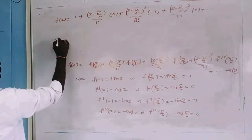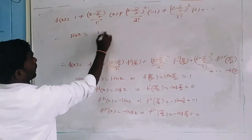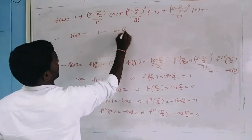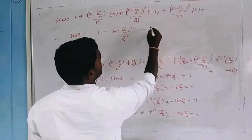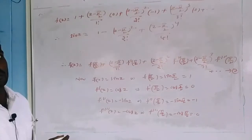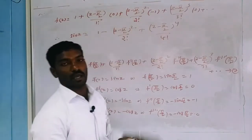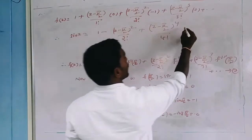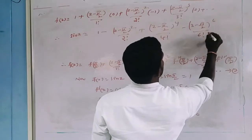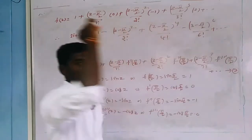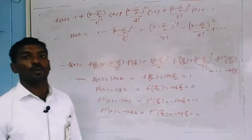Therefore, F of Z equals sin Z equals 1 minus Z minus pi by 2 whole square by 2 factorial, plus Z minus pi by 2 whole power 4 by 4 factorial, minus Z minus pi by 2 whole power 6 by 6 factorial, plus and so on. This is known as the Taylor series expansion of sin Z about Z equals pi by 2.